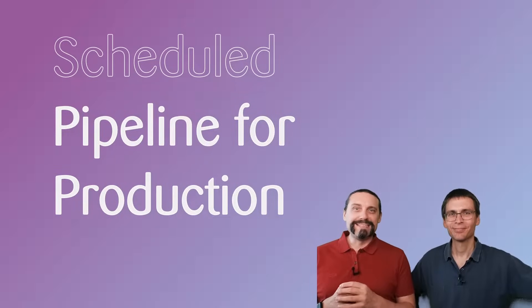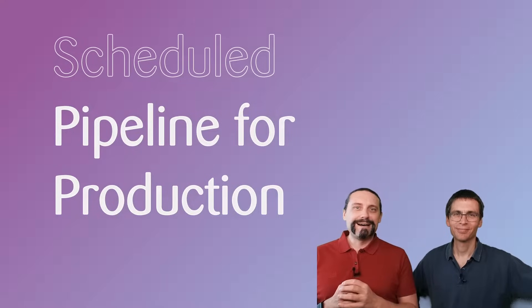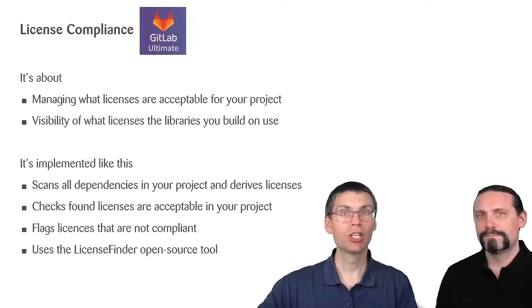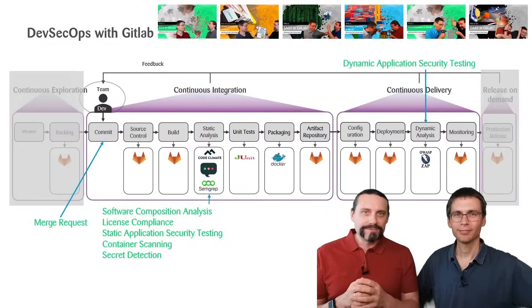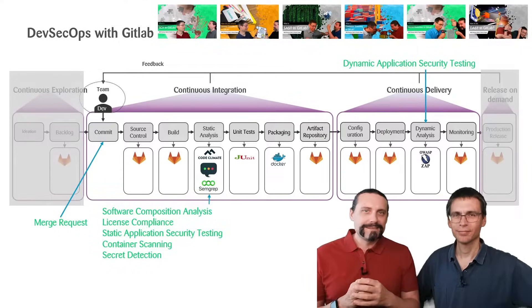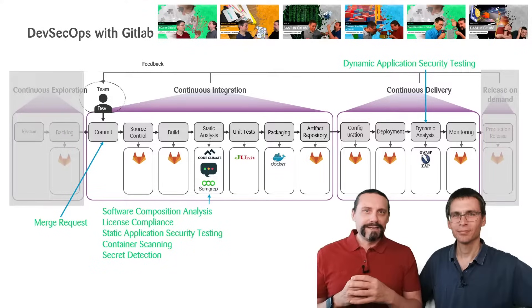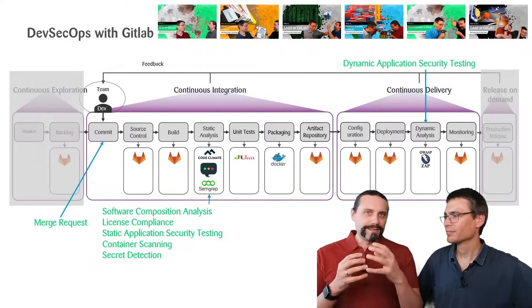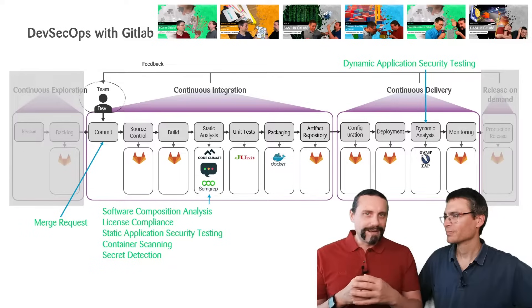Hi and welcome back to the 11th video about our DevSecOps pipeline, which we are creating with GitLab. In our past videos, we have created this DevSecOps pipeline together with GitLab. We have introduced six tools which ensure the security of our application.